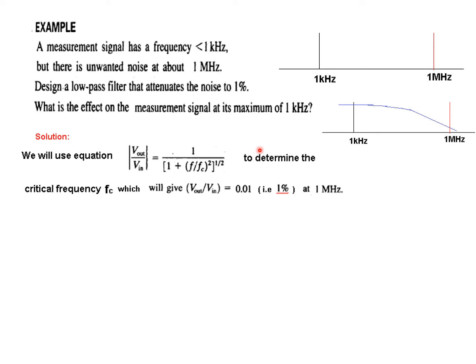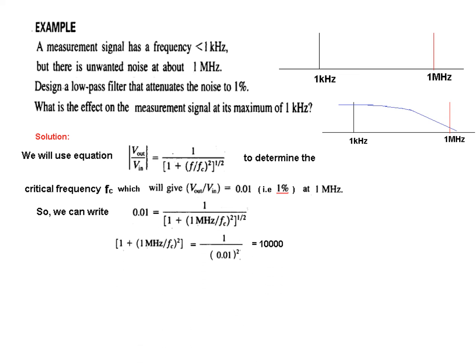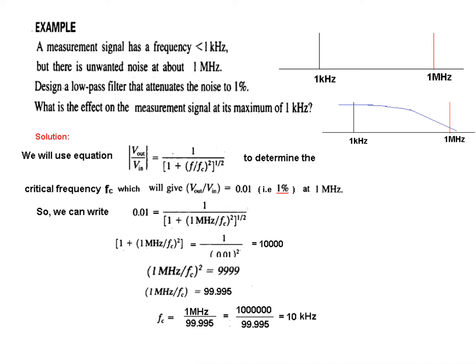Using the Vout/Vin formula, we determine the critical frequency fc that gives Vout/Vin = 0.01 (1%) at 1 MHz. We set the formula equal to 0.01 with f = 1 MHz and solve for fc. Following through the calculation, fc comes out to be 10 kHz.